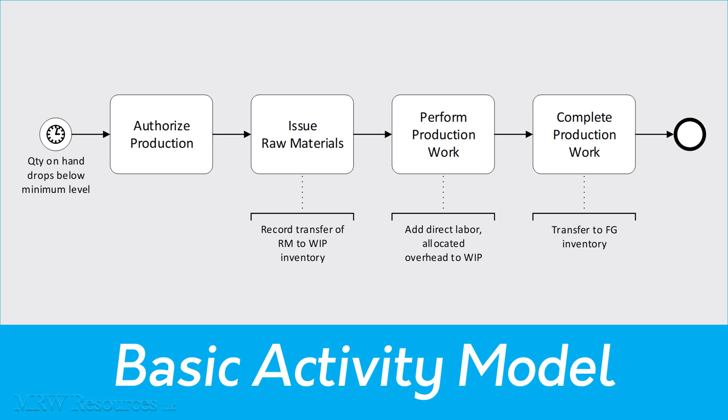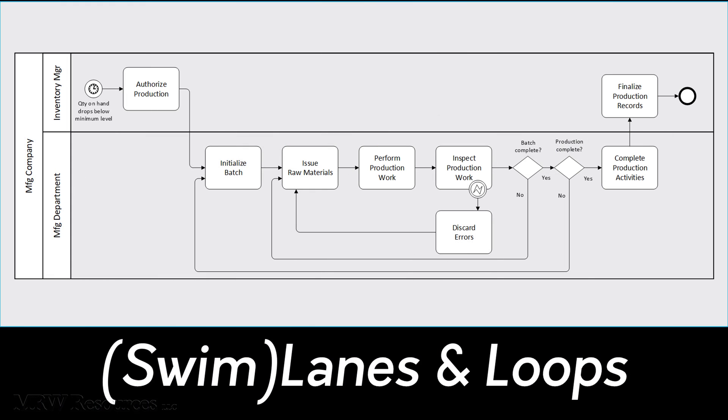All right, so here's a basic activity model. From our basic process, we can determine responsibilities for each activity and add the appropriate lanes. We can also consider the nature of the conversion process and whether it consists of batches of products. If it does, we can turn those batches into loops as we work our way through the production order.